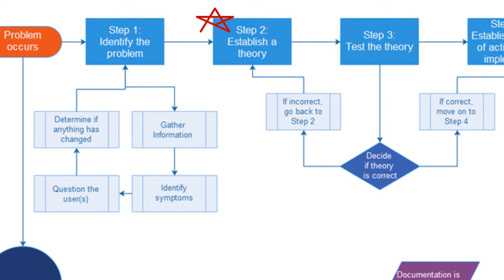Step 2. Establish a theory. Well, you don't know if the theory is going to be correct or not. You want to establish something. You want to question the obvious. You want to start with the most likely. The most likely cause.